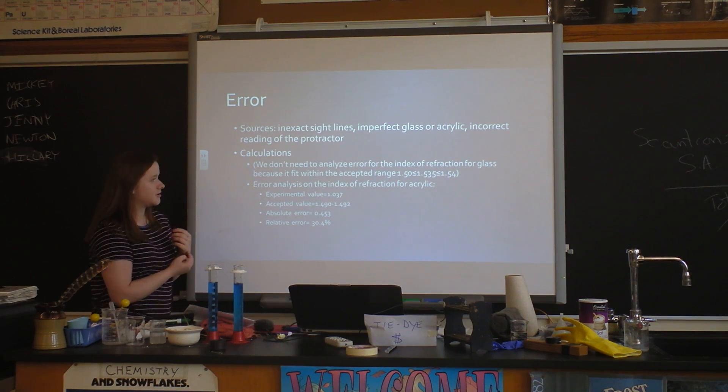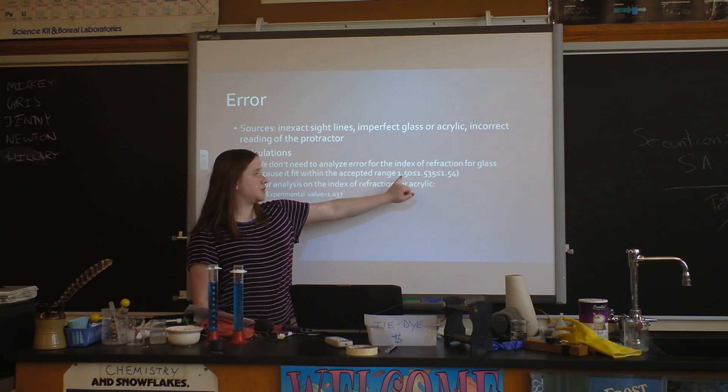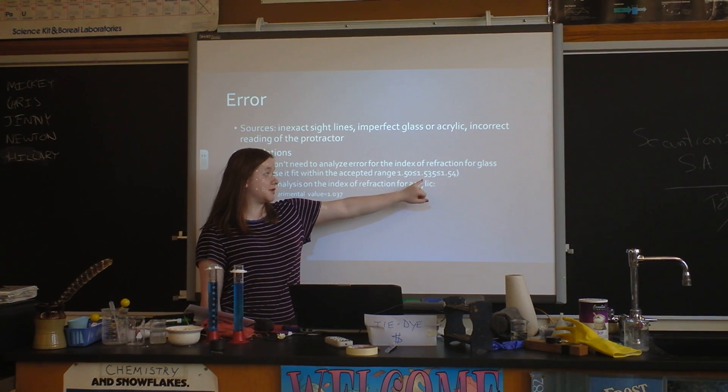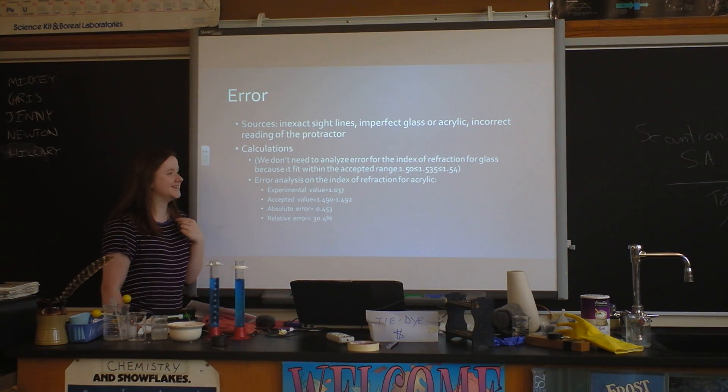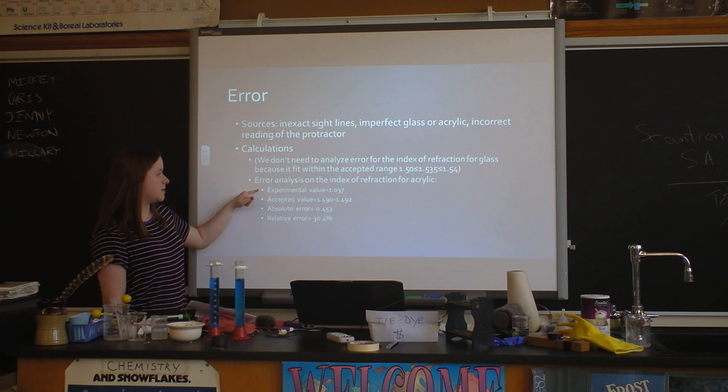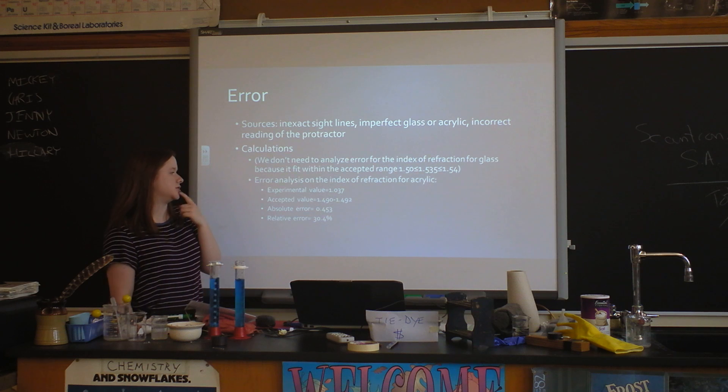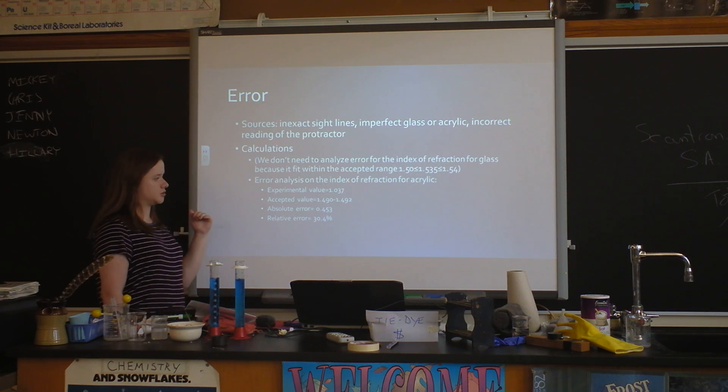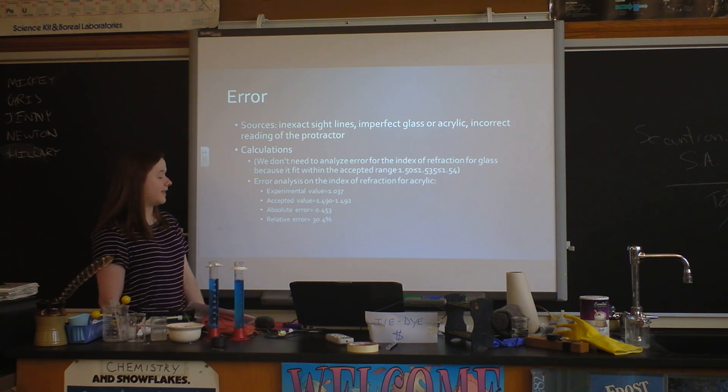For our error calculations, the index of refraction of glass is between 1.50 and 1.54, and the value we got from our slope was 1.535, which fits in the range, so it was not wrong. The acrylic was not in the range - the experimental value we got was 1.037 and we had a range of 1.490 to 1.492, so we used the smaller part of the range because we were too low. The relative error was 30% wrong on that one, so that one was a little more wrong.